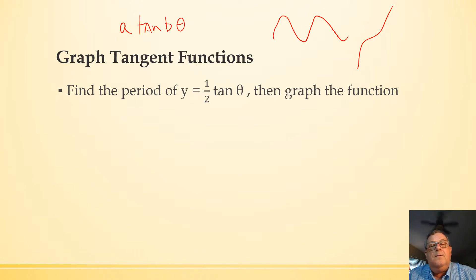Now, ordinarily with a sine and cosine function, this a would have to do with amplitude, which means how far does this go up and down? Well, we don't have an up and down movement with a tangent function, so we don't really have an amplitude.